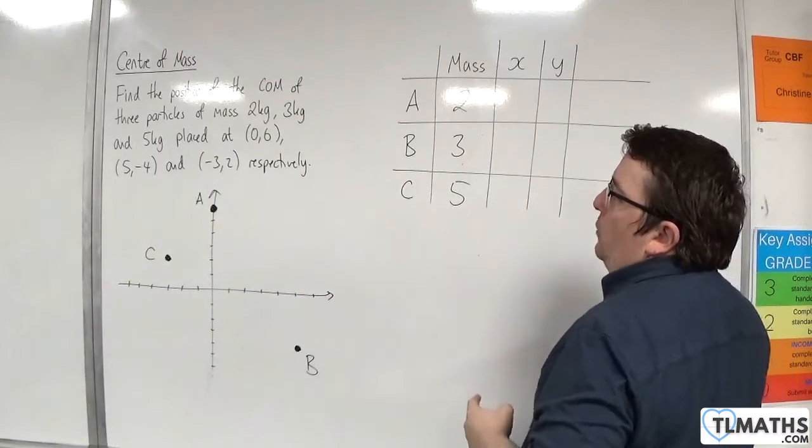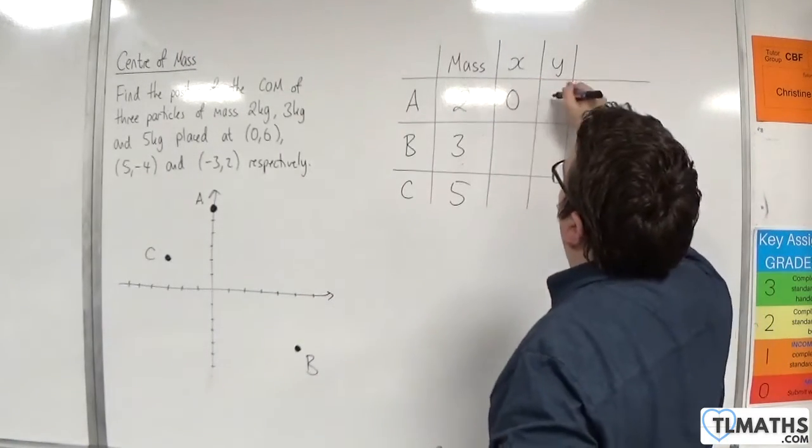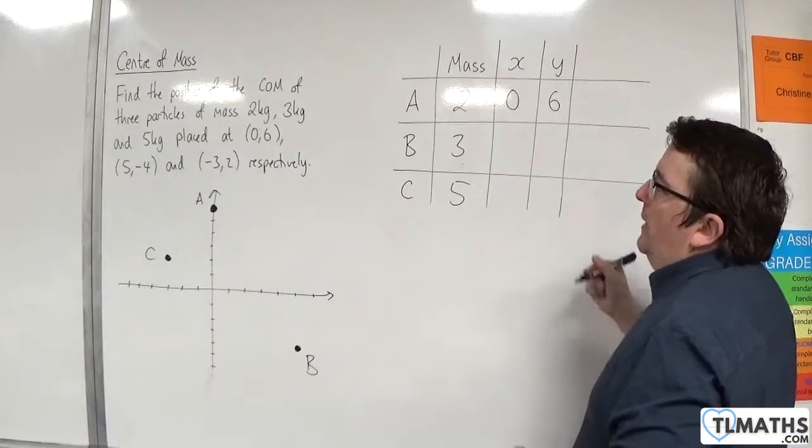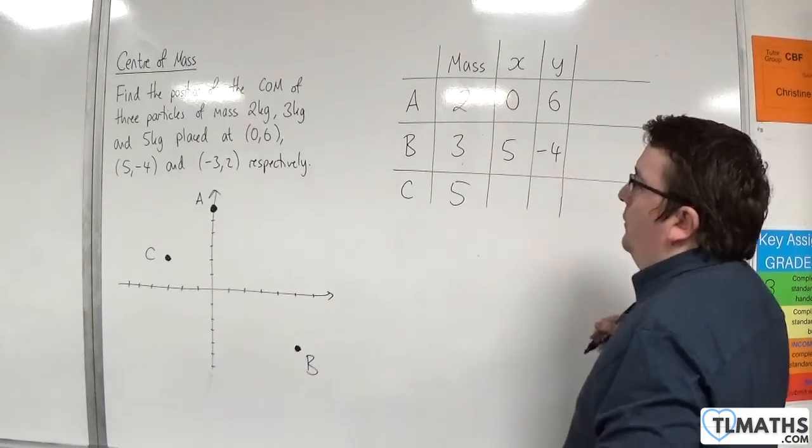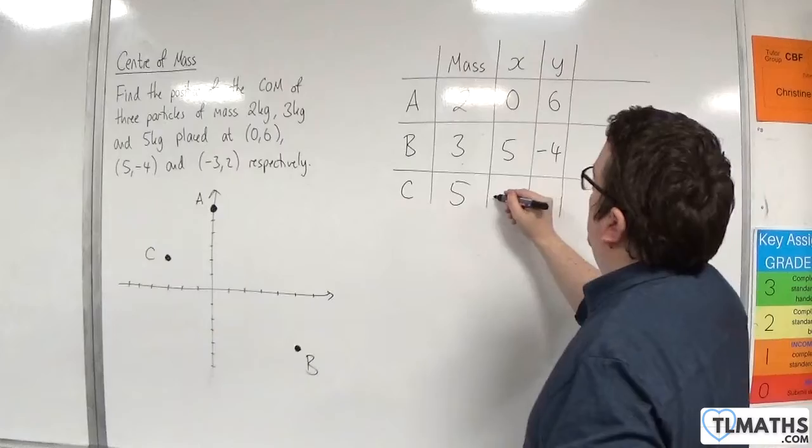A is located at 0, 6, B is located at 5 minus 4, and C is located at minus 3, 2.